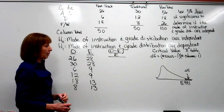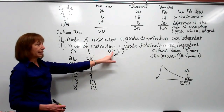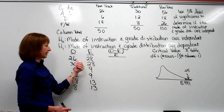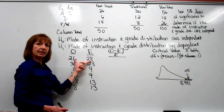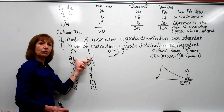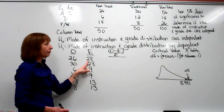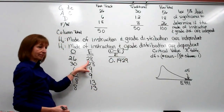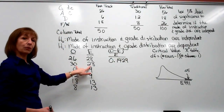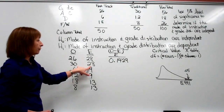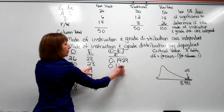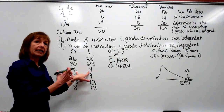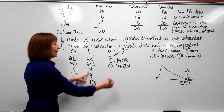That's how you calculate the expected values for the test of independence. Now for each cell, we take observed minus expected, square it, and divide by expected. For the first cell: 26 minus 28 is negative 2, squared is 4, divided by 28 gives 0.1429. For fast track grade D: 6 minus 9 is negative 3, squared is 9, divided by 9 gives 1.